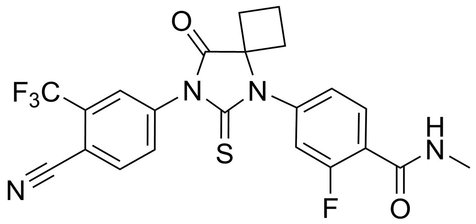Enzalutamide was ultimately selected from the two for further clinical development and was eventually marketed. RODE-162 is also very closely related to apalutamide, with the two compounds differing only by the replacement of a single atom — a carbon atom in one of the phenyl rings of RODE-162 swapped with a nitrogen atom in apalutamide — and apalutamide was approved for the treatment of prostate cancer in 2018.